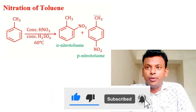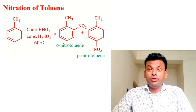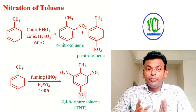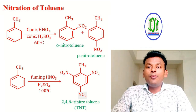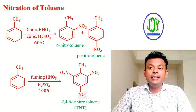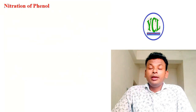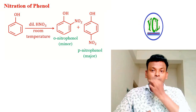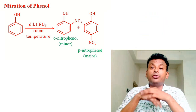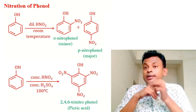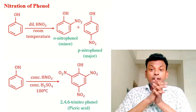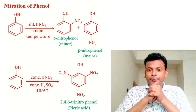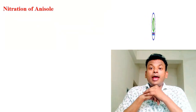Nitration of toluene: mixed acid is used to form ortho-nitrotoluene and para-nitrotoluene. With fuming HNO₃ and H₂SO₄ at 100°C, 2,4,6-trinitrotoluene (TNT) is formed. Nitration of phenol: phenol reacts at room temperature with dilute HNO₃ to form ortho-nitrophenol and para-nitrophenol (para is major). With concentrated HNO₃ and concentrated H₂SO₄ at 100°C, 2,4,6-trinitrophenol (picric acid) is formed.